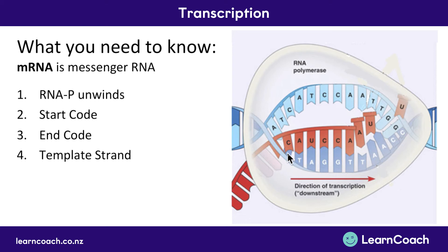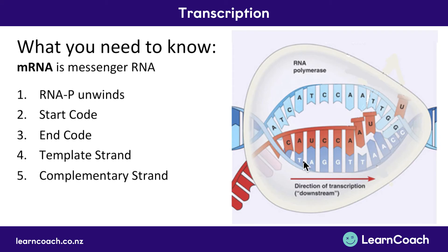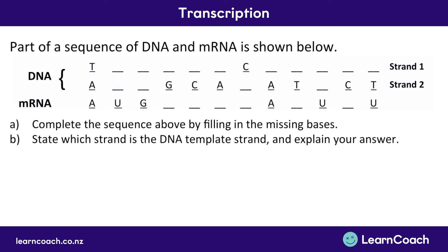There's also a template strand — in this case the bottom strand — which is what the mRNA gets matched against. So T is matched with A, and A is matched with U, since T has been replaced. The complementary strand, as you can see, is exactly the same as the mRNA except that U and T have been switched out. That's the final point to remember.